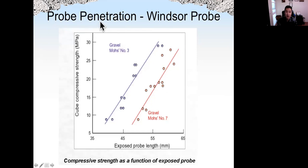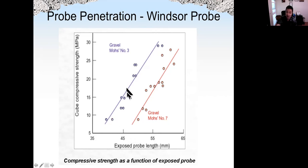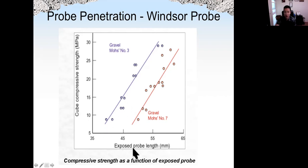Here are some results showing the strength of the concrete and the exposed probe length — basically how deep the probe can penetrate. As we can see, for different types of aggregate — gravel number three and gravel number seven — the correlation between the strength of the concrete and the exposed probe length is quite different. However, for the same type of mix proportion and the same type of aggregate, we have an almost linear correlation between exposed probe length and the strength of concrete.